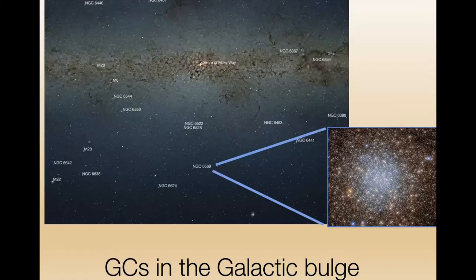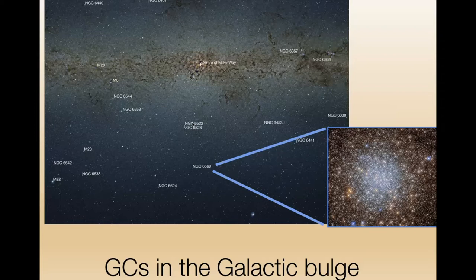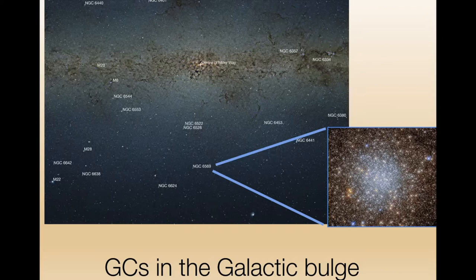The number of globular clusters in the galactic bulge is still under debate. The current Baumgardt and Vasiliev globular cluster catalog lists 160 confirmed Milky Way globular clusters, and a third of those reside in the inner galaxy. But the VISTA Variables in the Via Lactea survey — the VVV survey — has put forward more than 100 new bulge globular cluster candidates, suggesting our census may be incomplete. This is a picture of globular cluster NGC 6569, consisting of thousands of gravitationally bound stars that are some of the oldest objects in the universe. Just as archaeologists use fossils to reconstruct Earth's history, we use globular clusters to reconstruct the history of the Milky Way, particularly the inner galaxy.